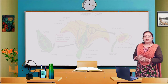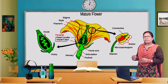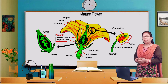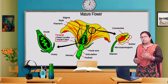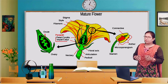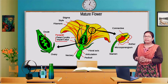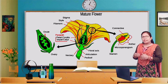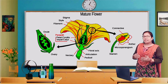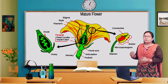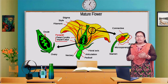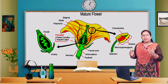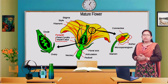The male reproductive part is known as stamen, whereas the female reproductive part is known as pistil. Stamen has two parts: anther and filament. The anther produces pollen grains that produce male gametes. Similarly, the pistil produces female gametes. So for reproduction, it is very important to bring these two gametes closer for fusion.